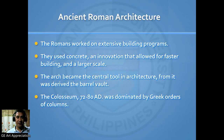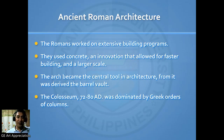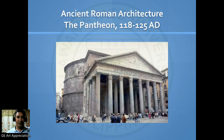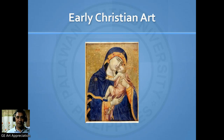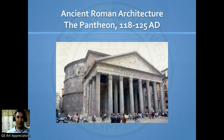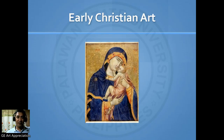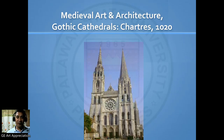Ancient Roman architecture: the Romans worked on extensive building programs. They used concrete — an innovation that allowed for faster building and a larger scale. For example, the Colosseum, dating from 72 to 80 AD, was dominated by Greek orders of columns. We also have the Pantheon, dating from 118 to 125 AD. Since there was a collapse during the time of the ancient Romans, early Christian art began to emerge.